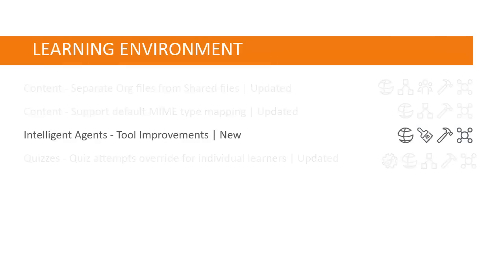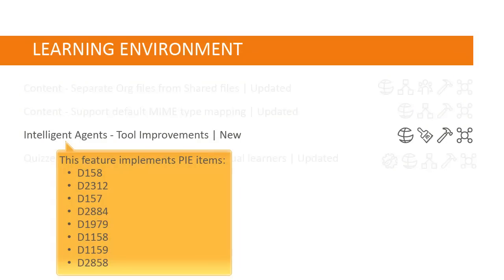Many new features and functionality have been introduced for Intelligent Agents. This feature implements PI Items D158, D2312, D157, D2884, D1979, D1158, D1159, and D2858.